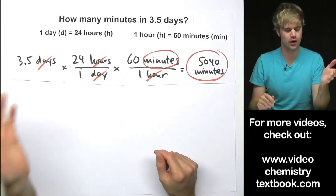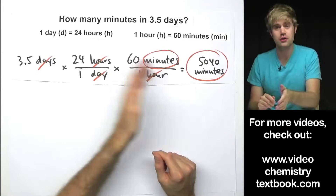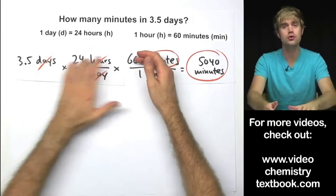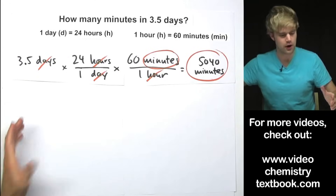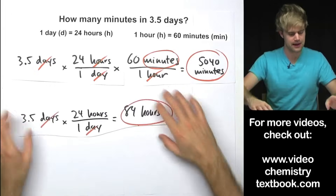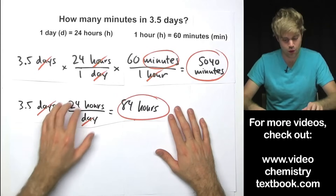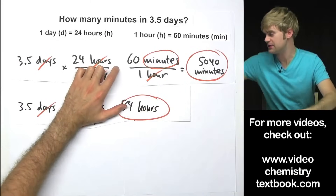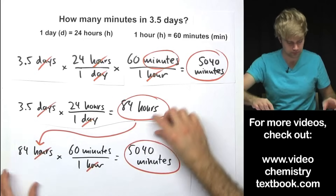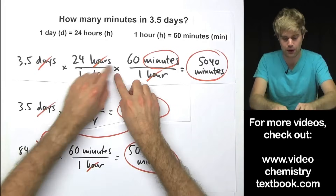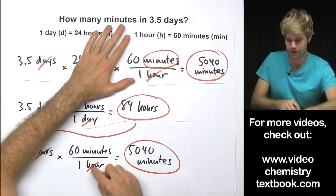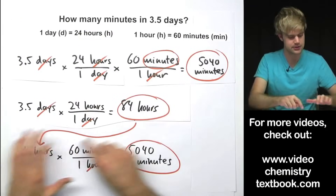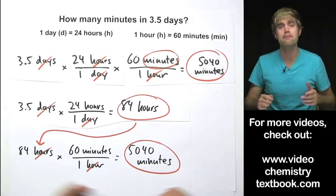A lot of times you're going to run into questions where you have to put a bunch of conversion factors together, but a large problem like this you can still break into smaller sections that you can understand individually. You can think about just the first part as being 3.5 days times 24 hours, which gives you an answer in hours. Then you take that result and multiply by the next conversion factor to get your final answer. So even for a large problem like this, you can take it piece by piece to make sure that each step makes sense.